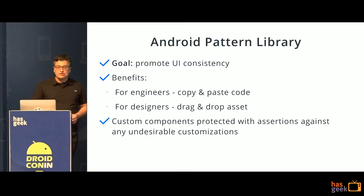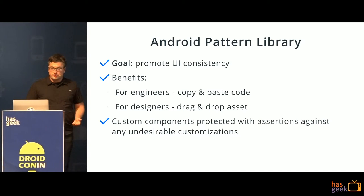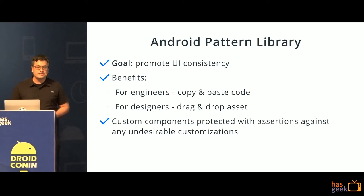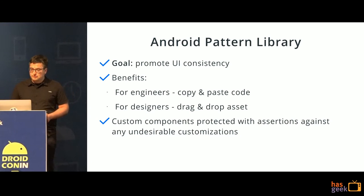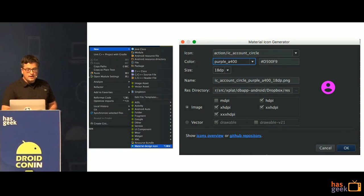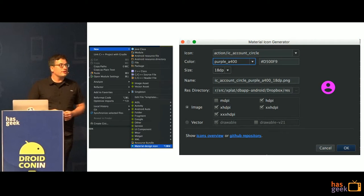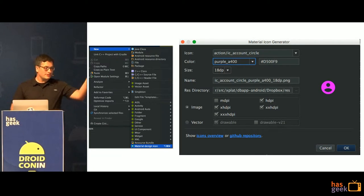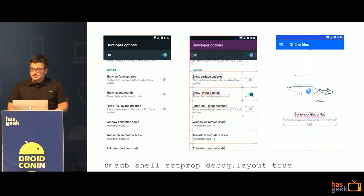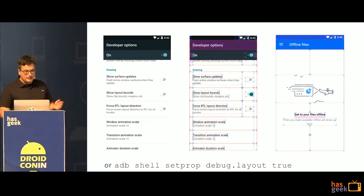To keep our UI consistent, we've created our own pattern library for components like patterns, selection controls, text fields, spinners, snack bars, dialogues, menus, etc. This is useful for both engineers who can copy and paste XML without much thinking, and for designers who can drag and drop an asset into a mock-up easily. There's also a very useful Android Studio plugin called Android Material Design Icons Generator — it's so simple that it doesn't require explanation beyond a screenshot. One very useful developer option is showing layout boundaries, which is helpful not only for debugging but also for cleaning up layouts and code.